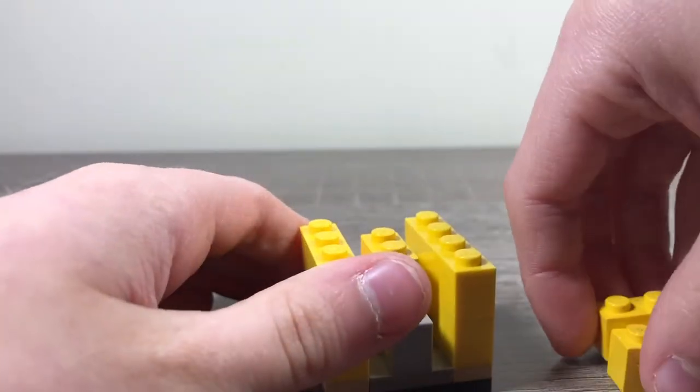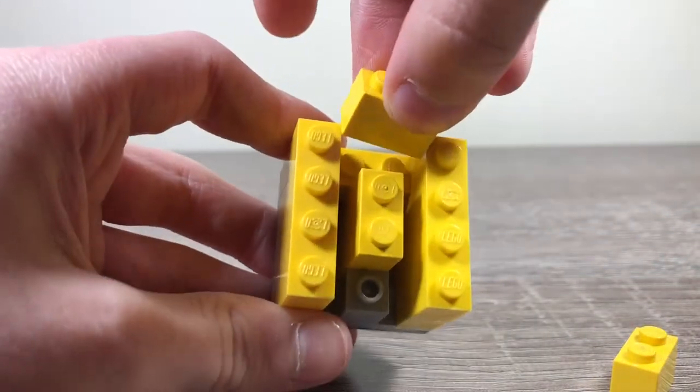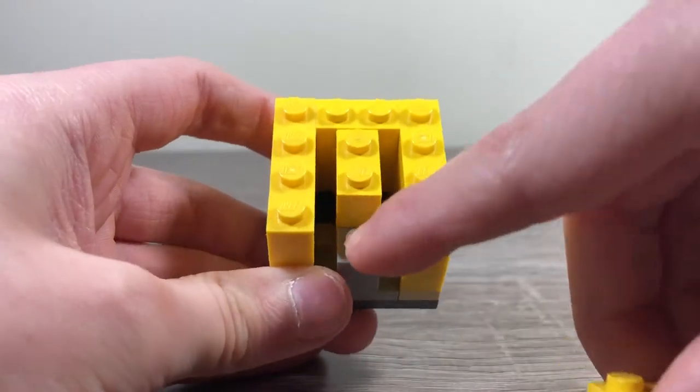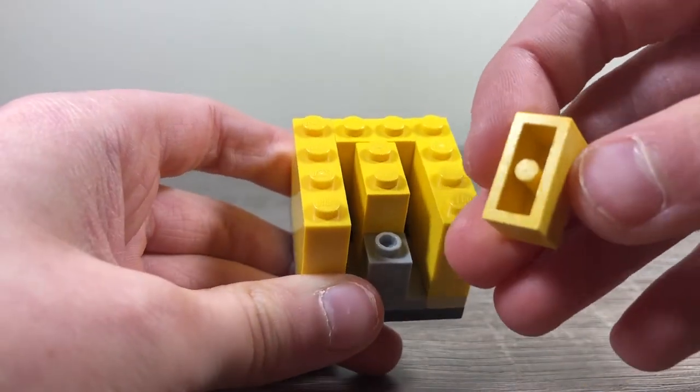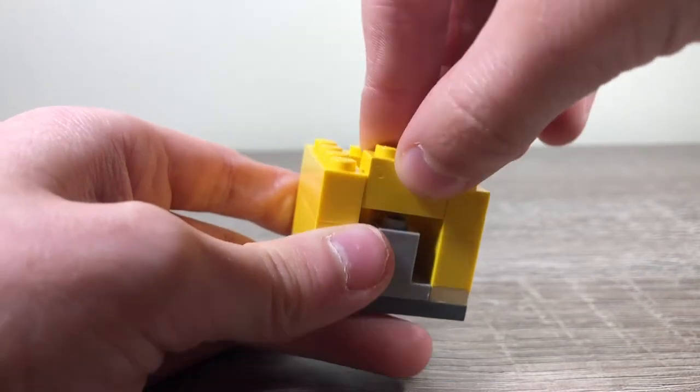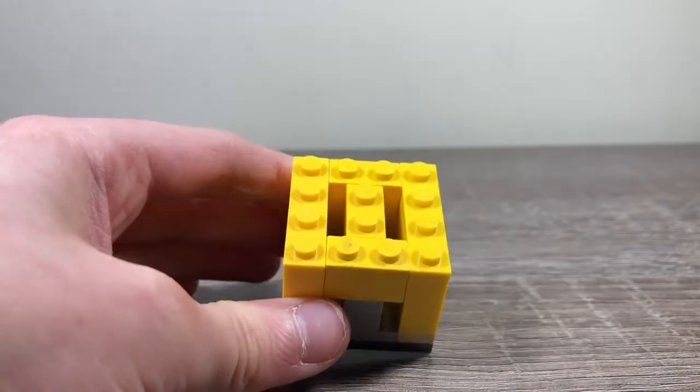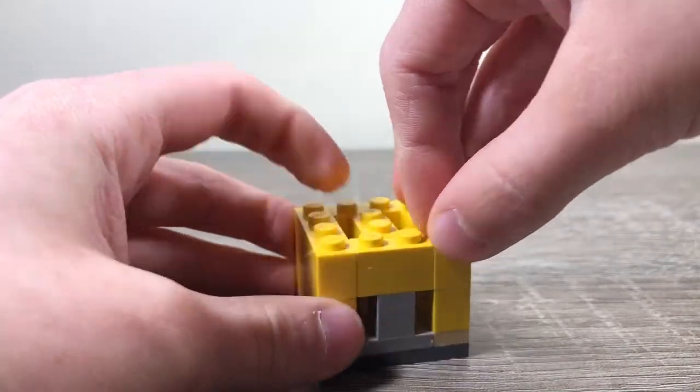Then take your remaining one by twos. One goes here. Why we have that hole there is so that this can go right in there. And look at that!